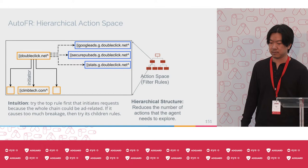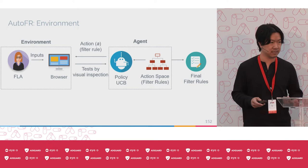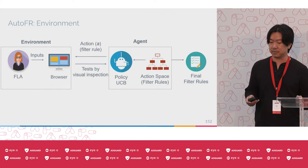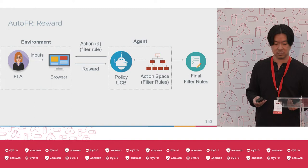The agent applies a rule in what we call the environment, which encompasses the browser and inputs from the user like what site to test. The environment gives back a reward, which replaces the visual inspection. This reward measures the effectiveness of the filter rule at blocking ads.